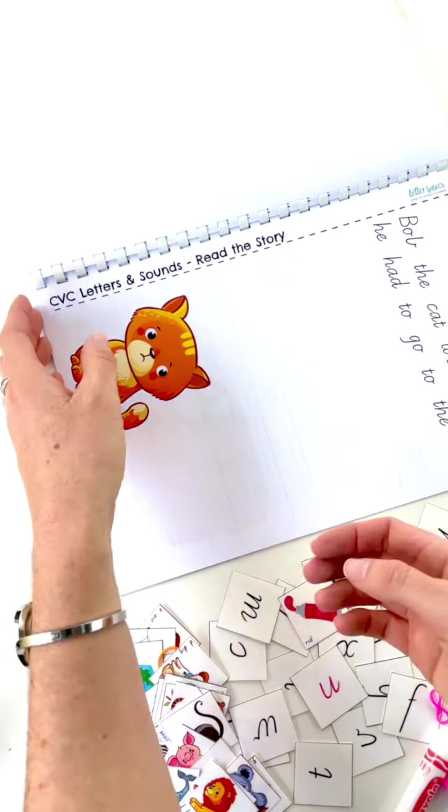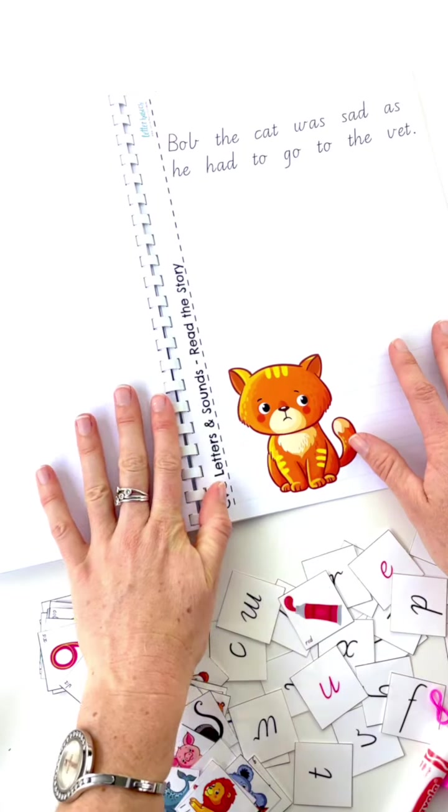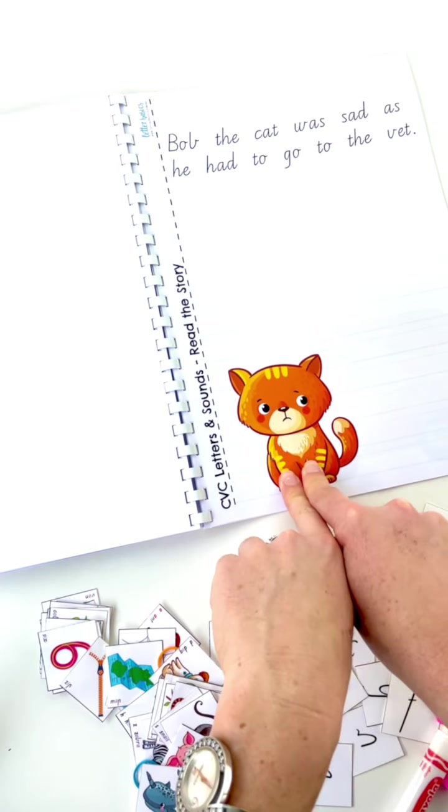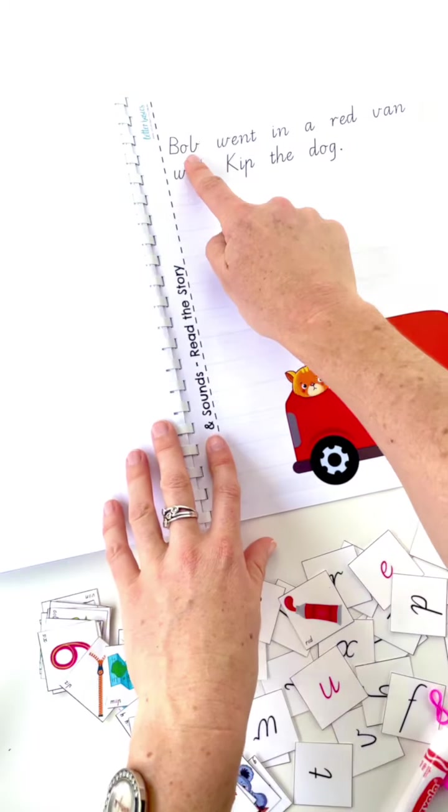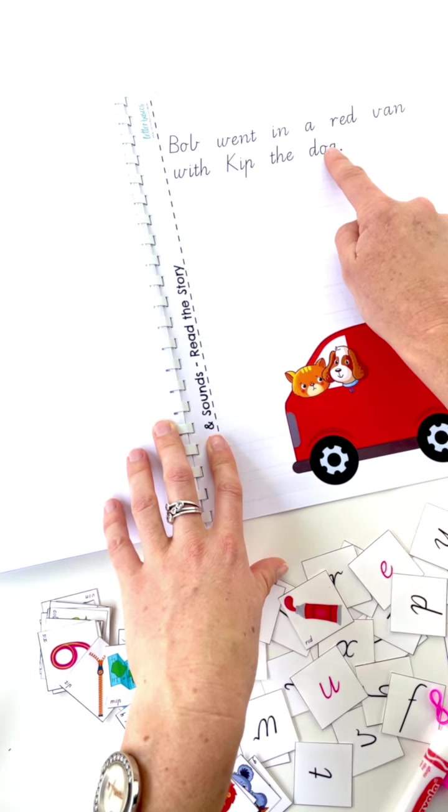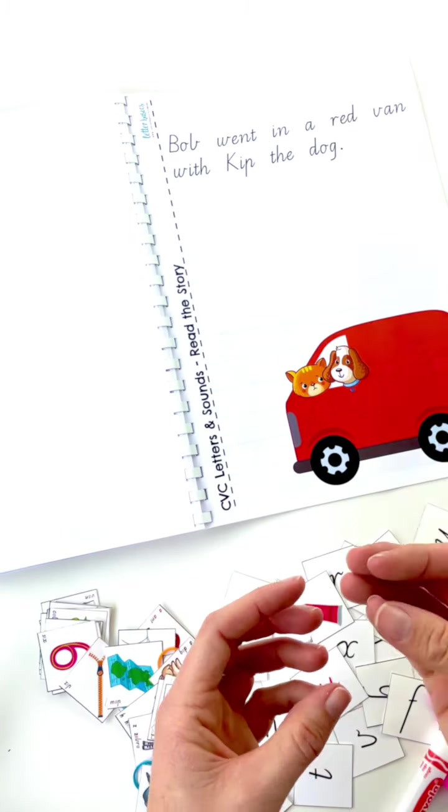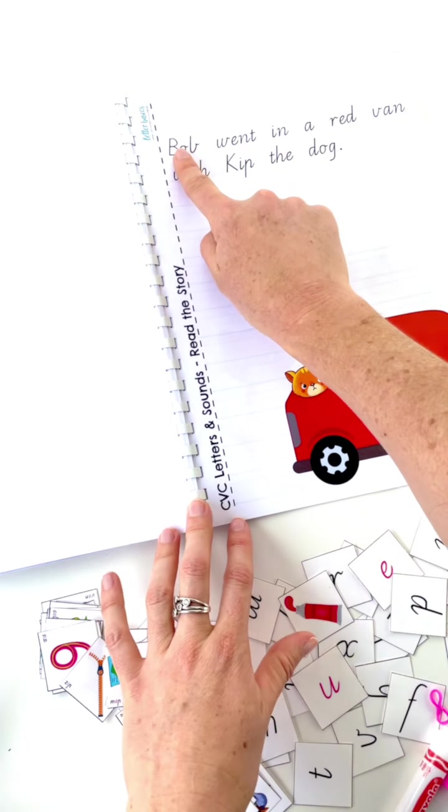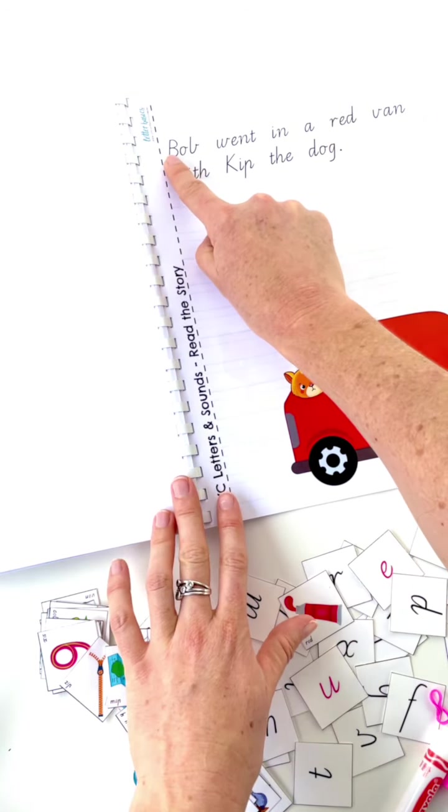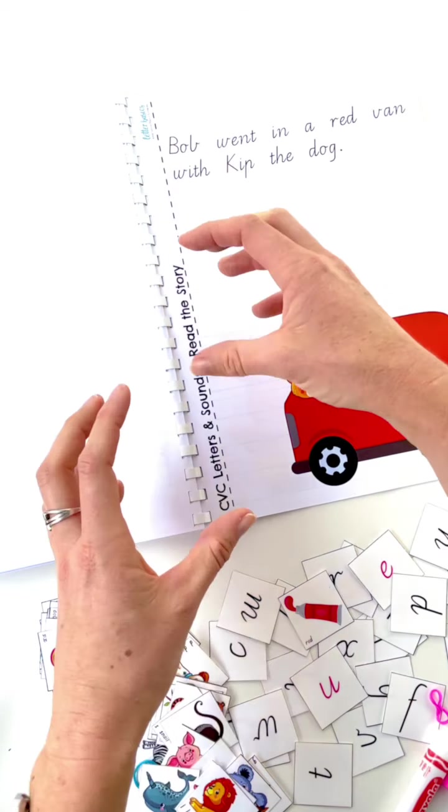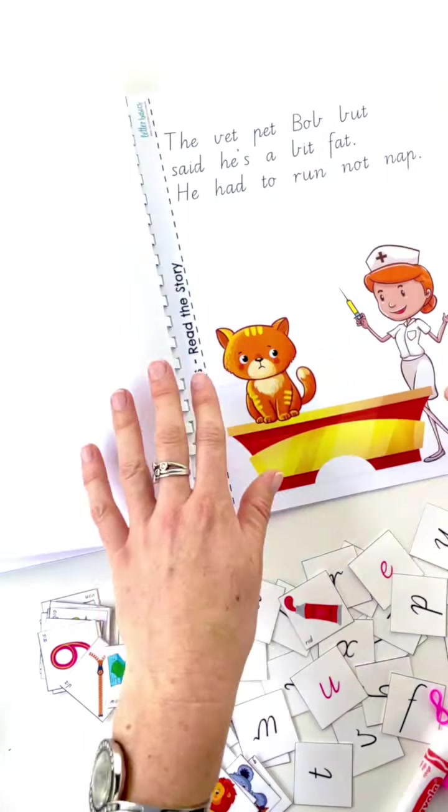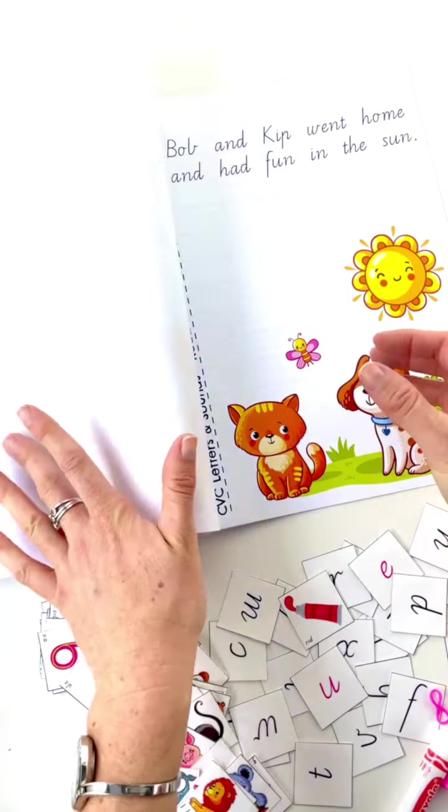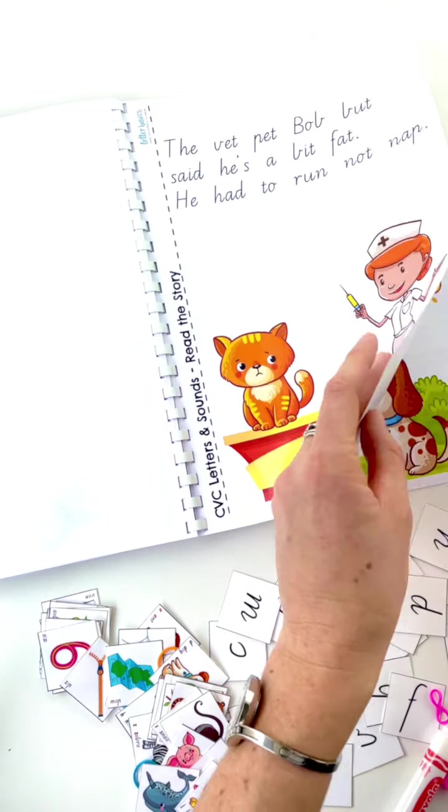And this, sorry in advance for my creative writing, it's pretty well non-existent. It's really hard to do this with only CVC words. So we've got Bob and his sad. Bob the cat was sad as he had to go to the vet. Poor Bob. Bob went in a red van with Kip the dog. So for this, this is then where we've brought everything together. We're now reading and using those CVC words. So we want your little one to be pointing to the words as they go. At the very beginning, they'll be pointing to the letters as they sound them out. So we're sounding out that word, Bob, and then putting it back together and reading it. He was sad because he was fat. So we had to run around and not nap. And then they went home and had fun in the sun.